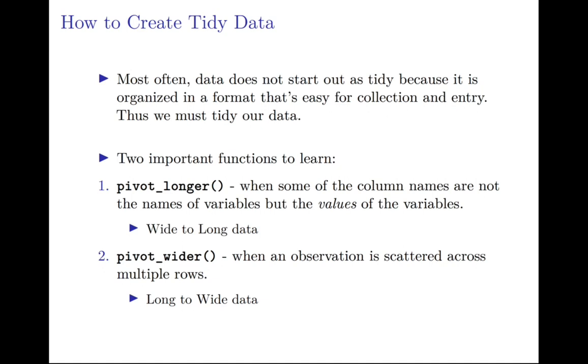pivot_longer is when some of the column names are not the names of variables but actually the values of the variables. That really equates to taking a wide data set and making it long. And then pivot_wider - that's a function you often use when an observation is scattered across multiple rows. So that allows you to take data in its long form and turn it to wide, which is often represented in community matrices or if you're thinking about sets of amino acids, all within a bunch of variables within one sample.